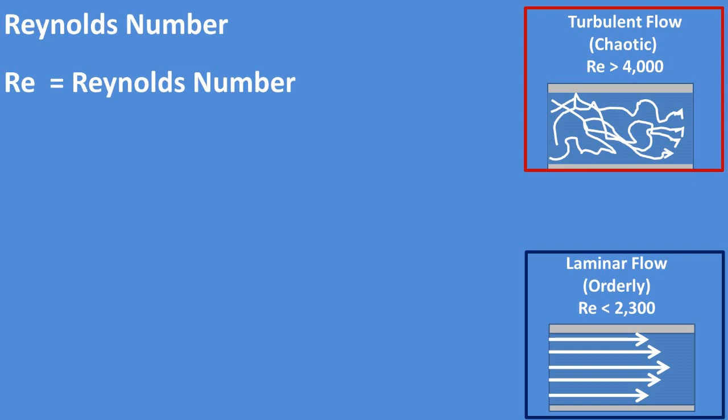Turbulent flow or chaotic flow is depicted at the top right as flow that is going chaotically in all directions but in general is going rightward. Or transient, which is a mixture of both laminar and turbulent flows.